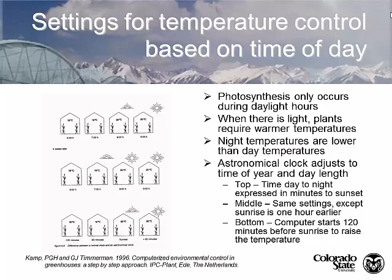Another thing to think about is that most photosynthesis in most crops is primarily occurring before solar noon. Most of your photosynthesis happens from sunrise to solar noon; after solar noon to sunset, plants are pretty much going into survival mode. So a lot of people will think about focusing their best climate control in the morning, and maybe letting the temperatures drift a bit higher in the afternoon.